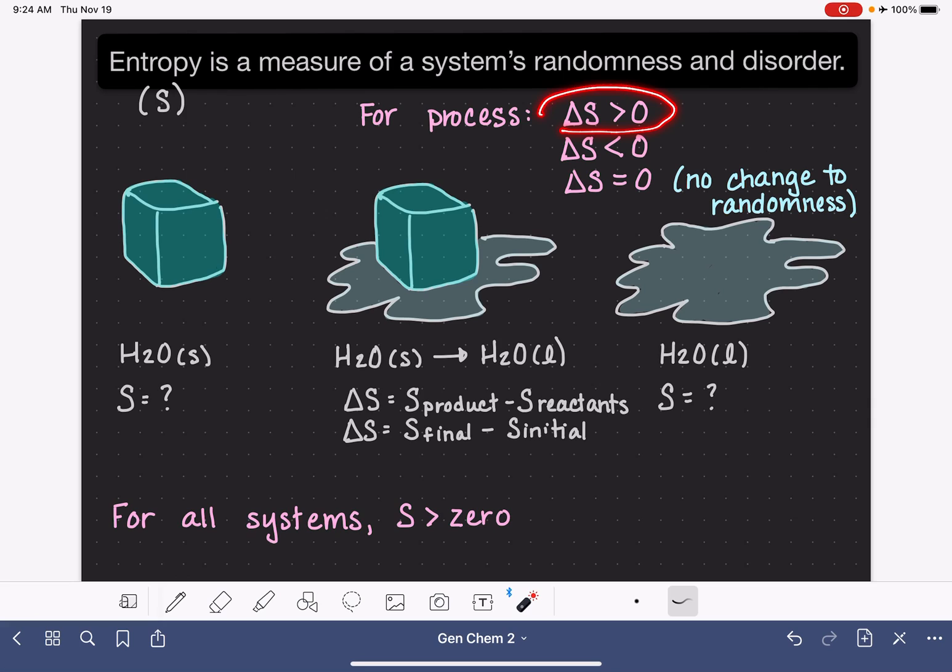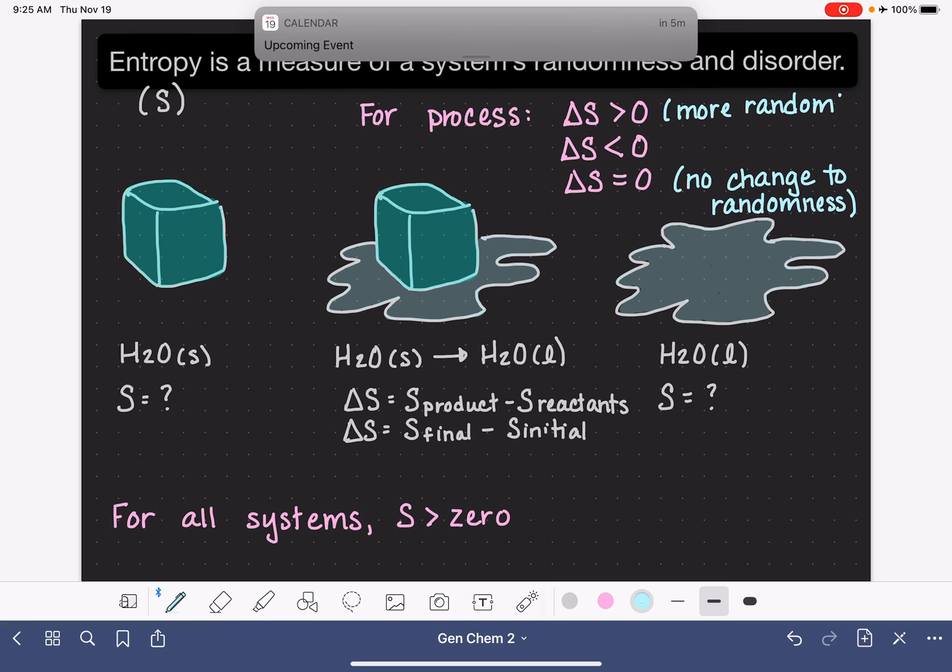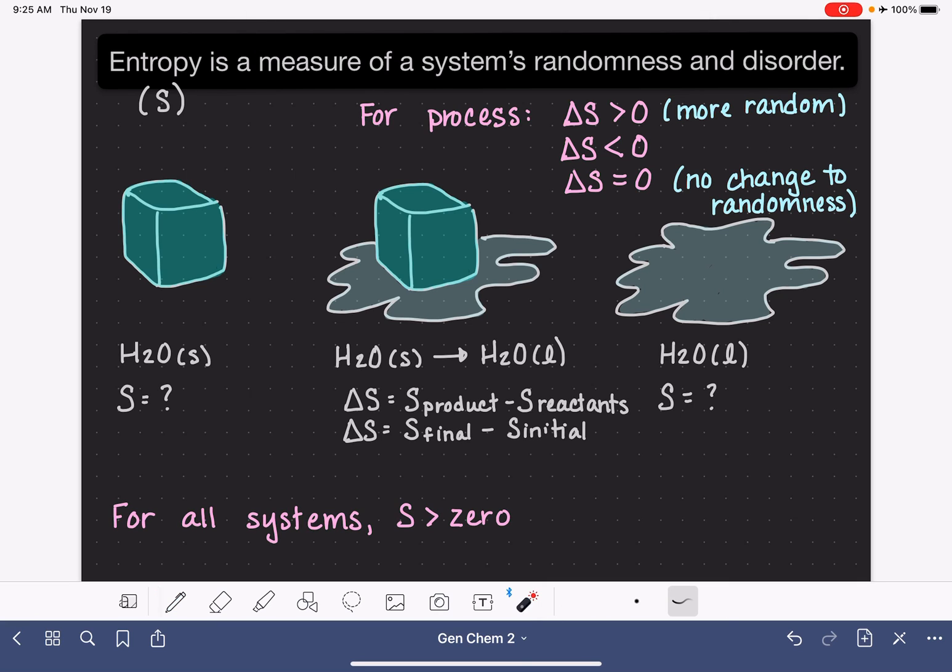If the change in entropy is greater than zero, this means that the system becomes or became more random. It increased in randomness. And then if the change in entropy was less than zero, this would mean that the system became less random. It somehow became more ordered.